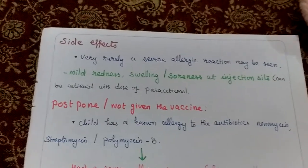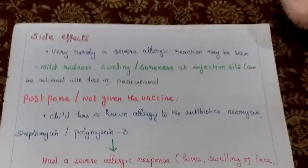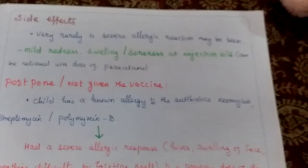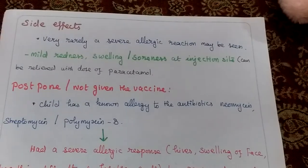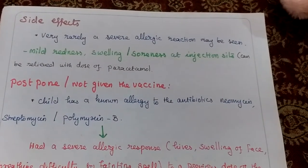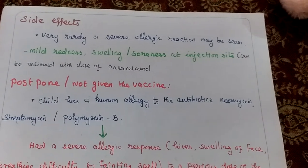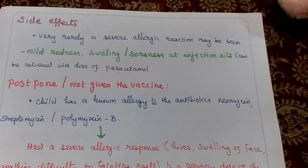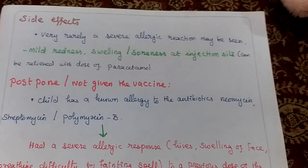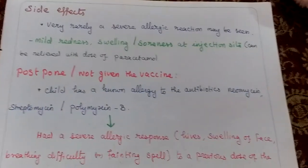Regarding side effects of polio vaccine: very rarely, a severe allergic reaction may be seen. Mild redness and swelling may also occur. We can manage this kind of side effect by using paracetamol.